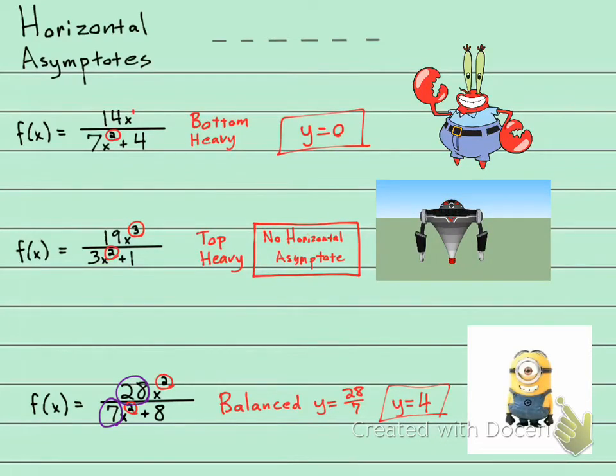All right, I'm going to get a little silly here, but this actually helps me remember what my horizontal asymptotes are. I have three possibilities, and I'm using these three cartoon characters over here.